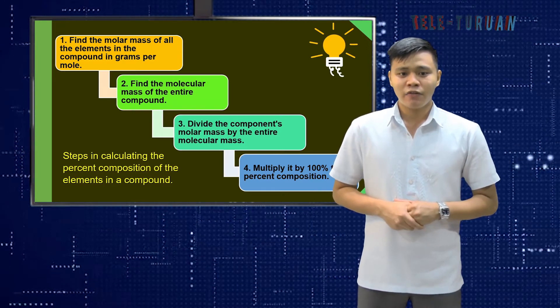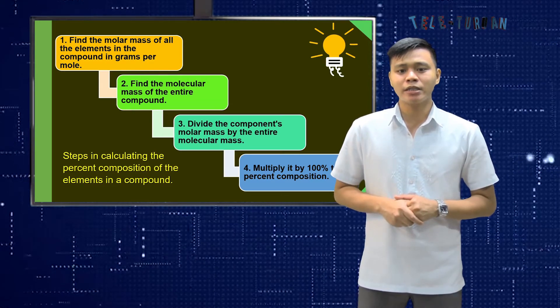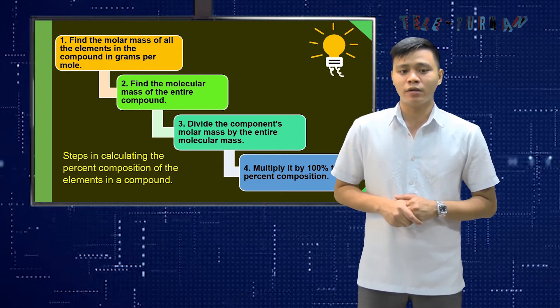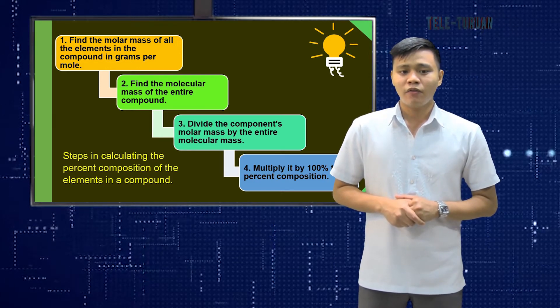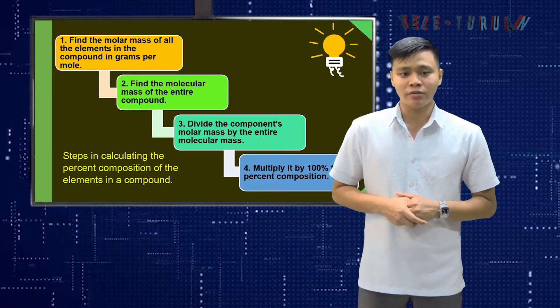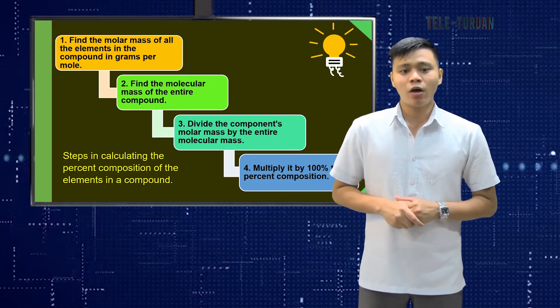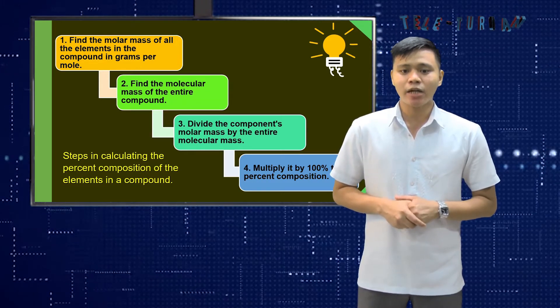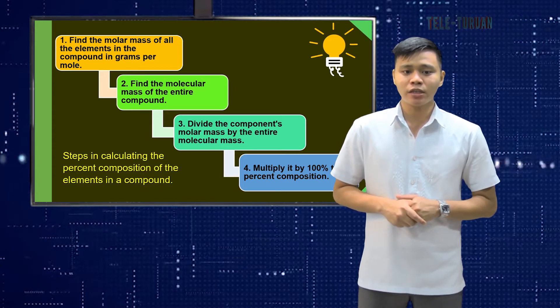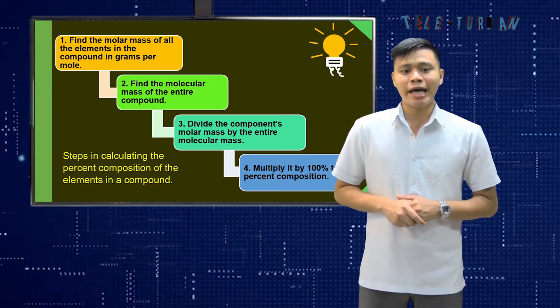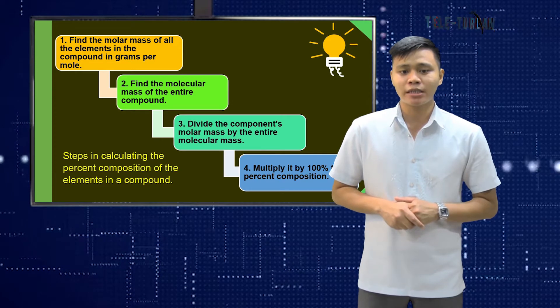The first step is, find the molar mass of the elements in the compound in grams per mole. Second, find the molecular mass of the entire compound. Third, divide the component's molar mass by the entire molecular mass. And fourth, multiply it by 100% to get percent composition.